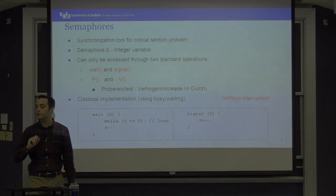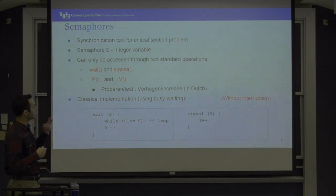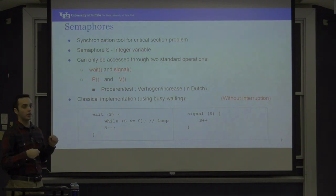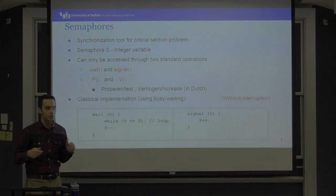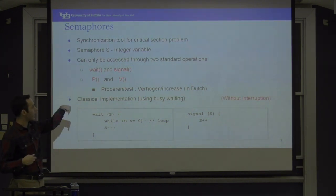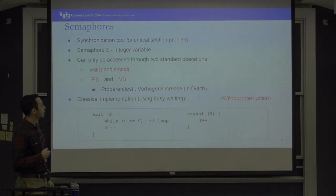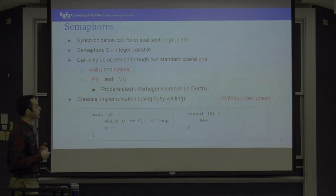A semaphore is a synchronization tool for the critical section problem. The basic concept is just an integer, and you can call two operations on it: wait or signal. You might also come across the older terms P and V — they were short for some Dutch words. The wait is like semaphore down, and in your Pintos code you will see that. Signal is like semaphore up — you're increasing and decrementing.